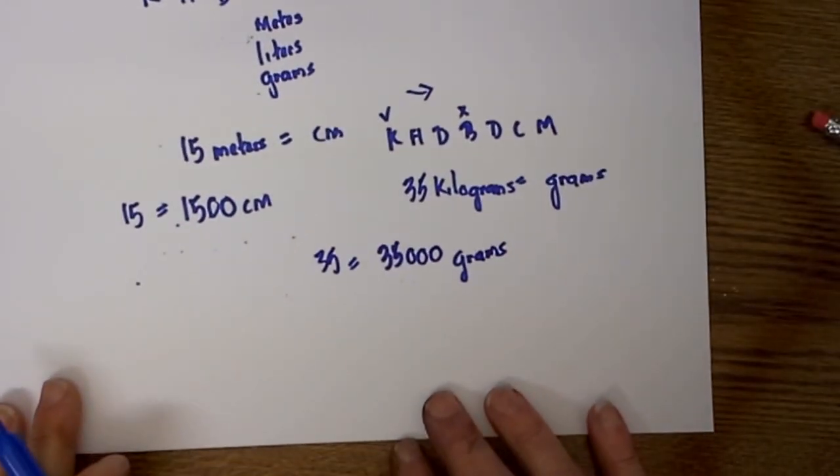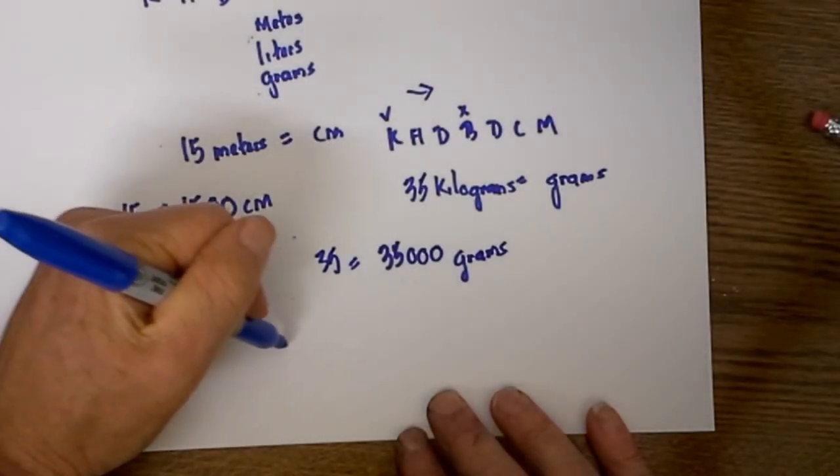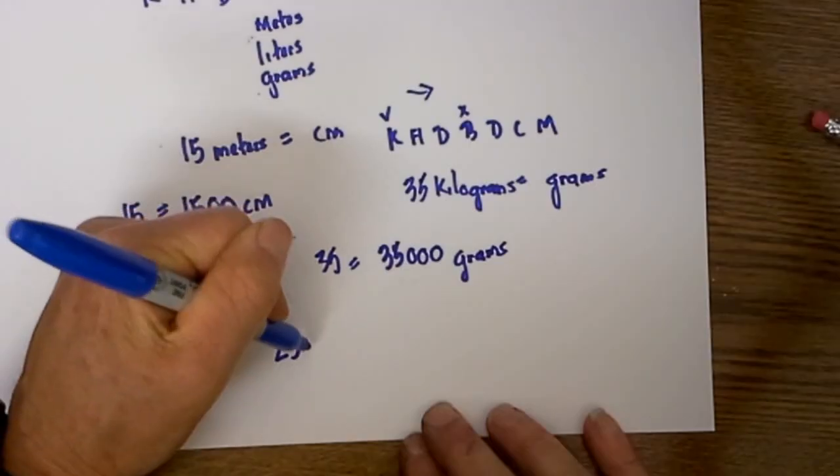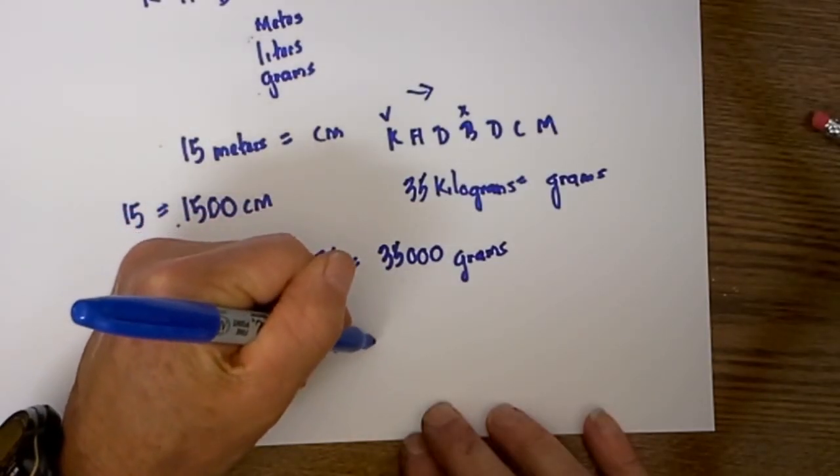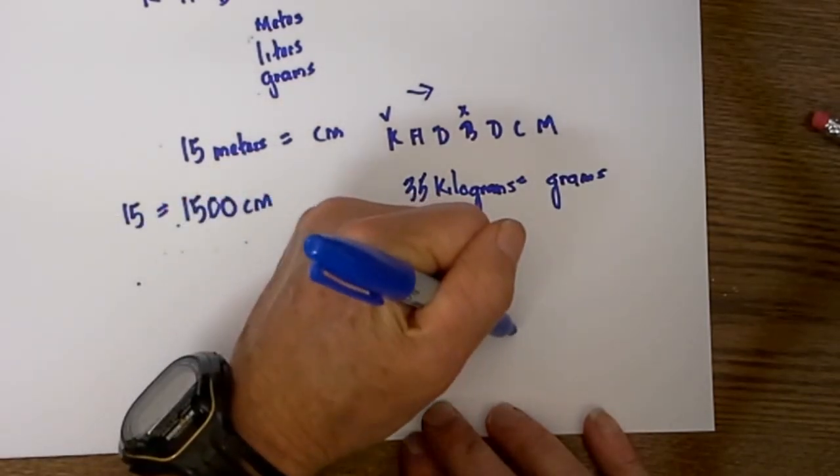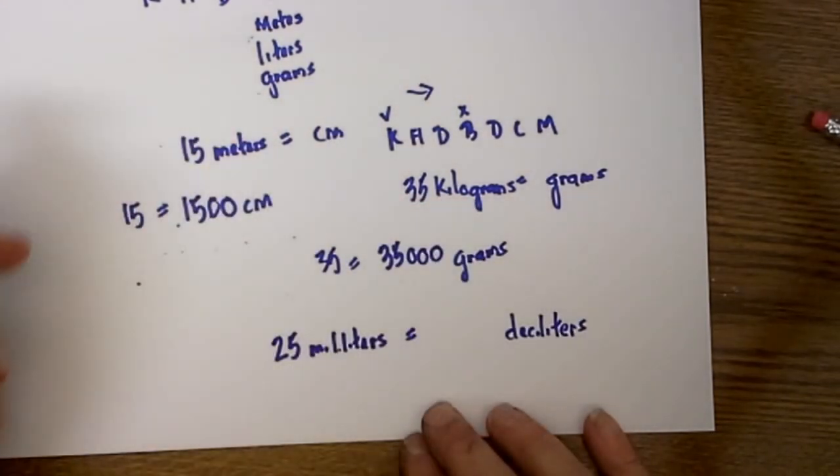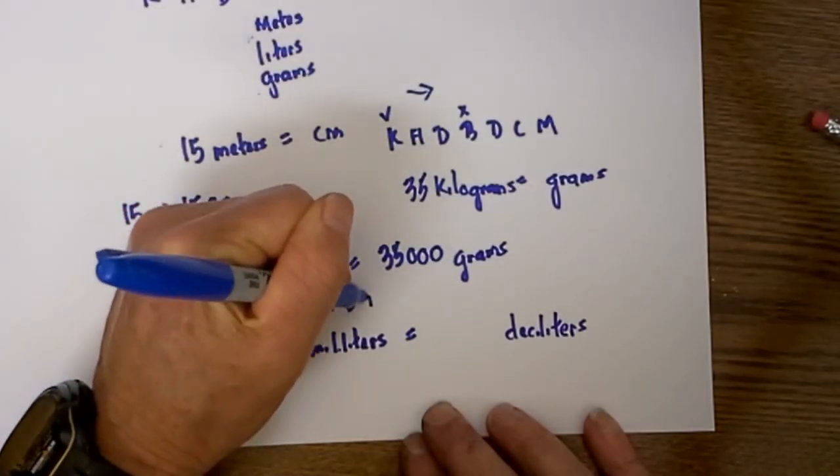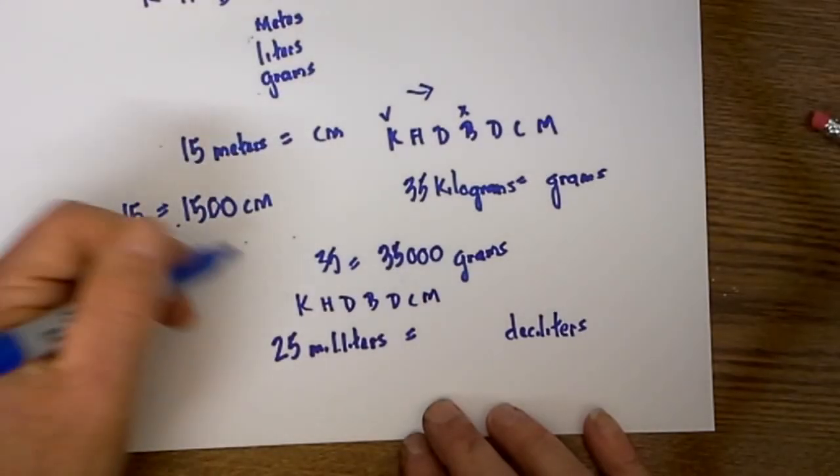Let's go one more and this time we go in the opposite direction. Let's start with 25 milliliters and border with liters is equal to how many deciliters? Again I will write this down, King Henry died by drinking chocolate milk. I will put a check what we are given.